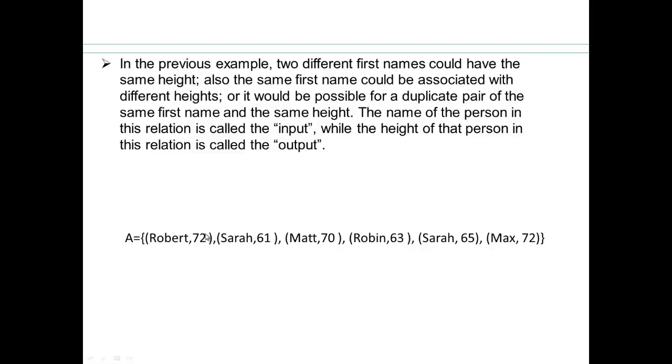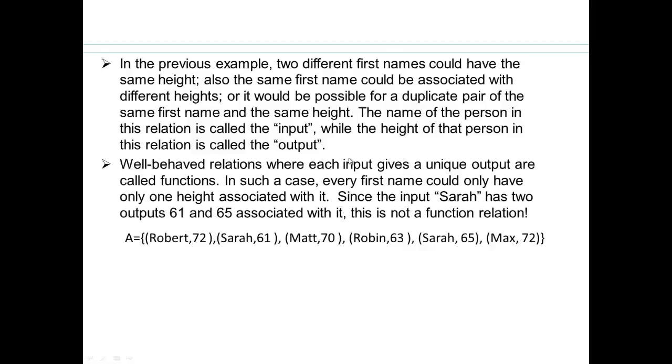The name of the person in this relation is called the input, while the height of that person in the relation is called the output. Well-behaved relations where each input gives a unique output are called functions. So one input giving you one output is called a function. So what do you think? Is this a function? The answer is no, because we have two first names with two different outputs. So same input, but different outputs.